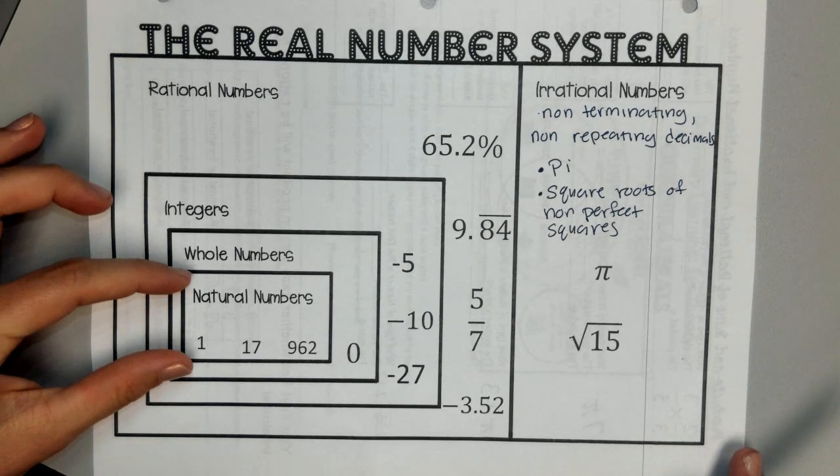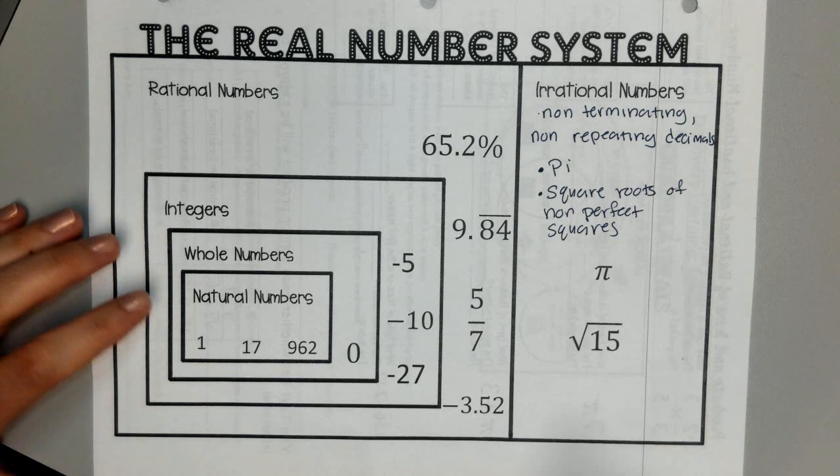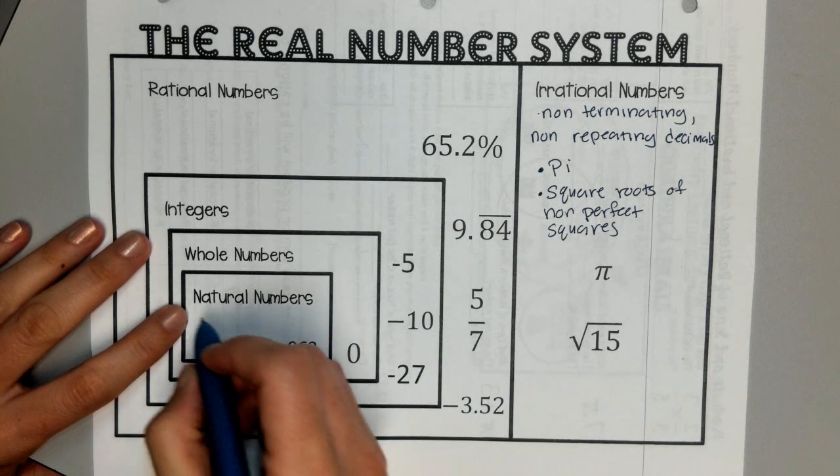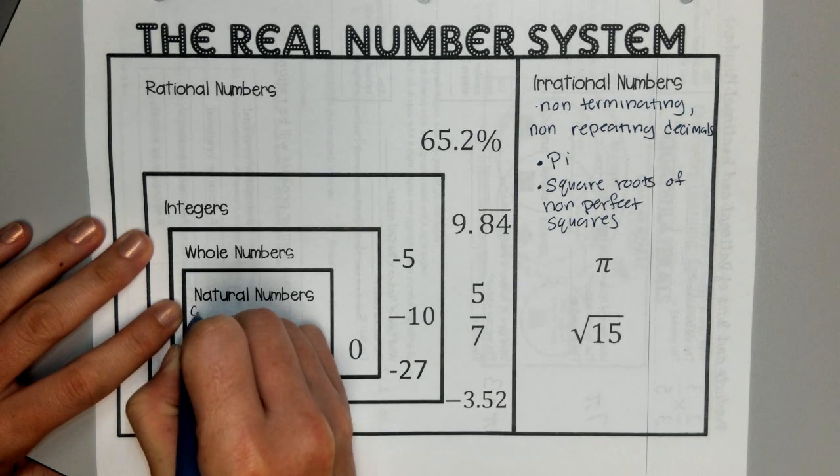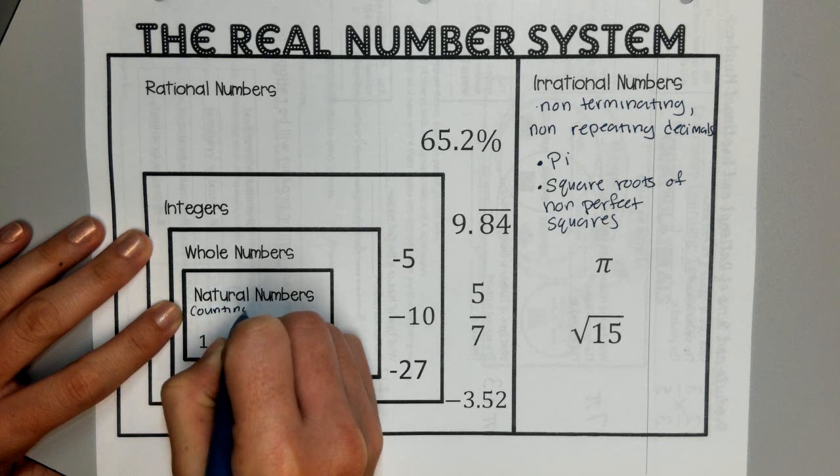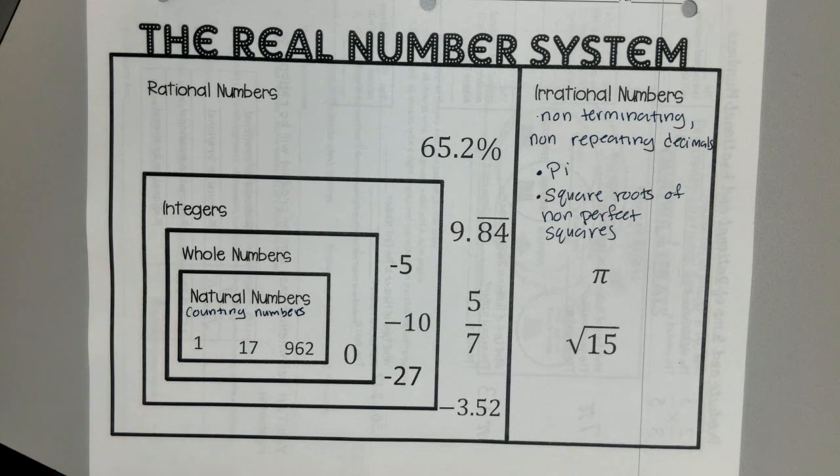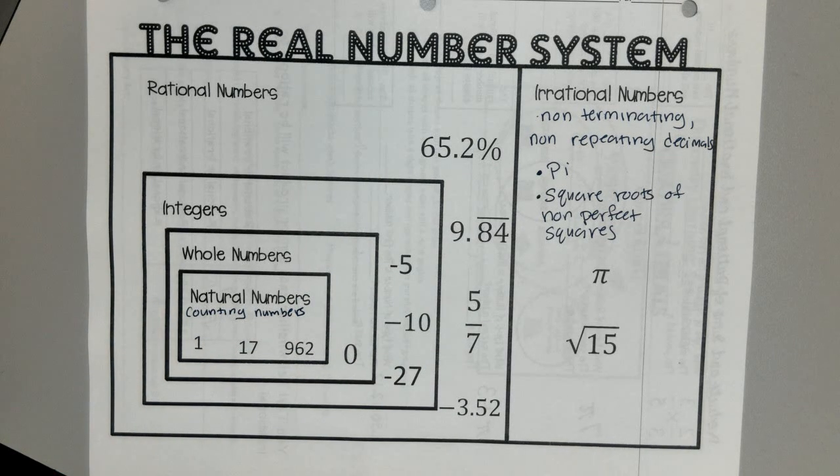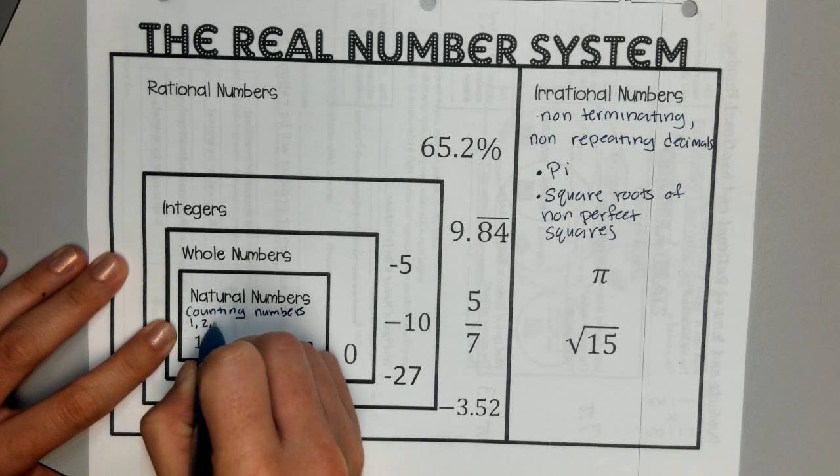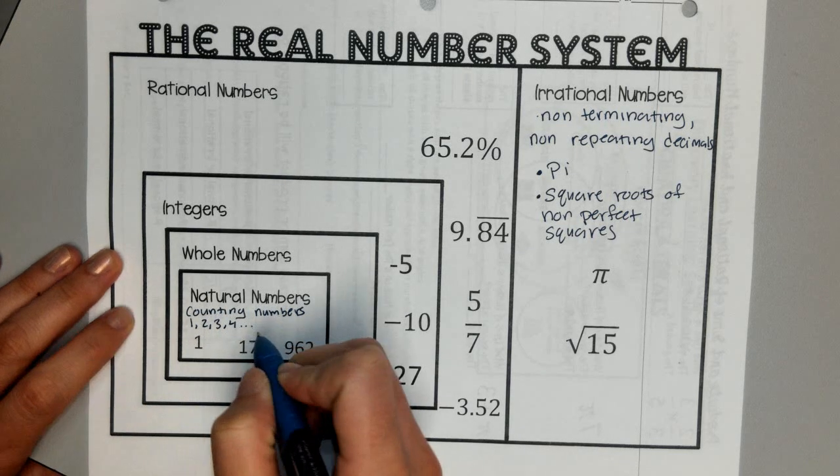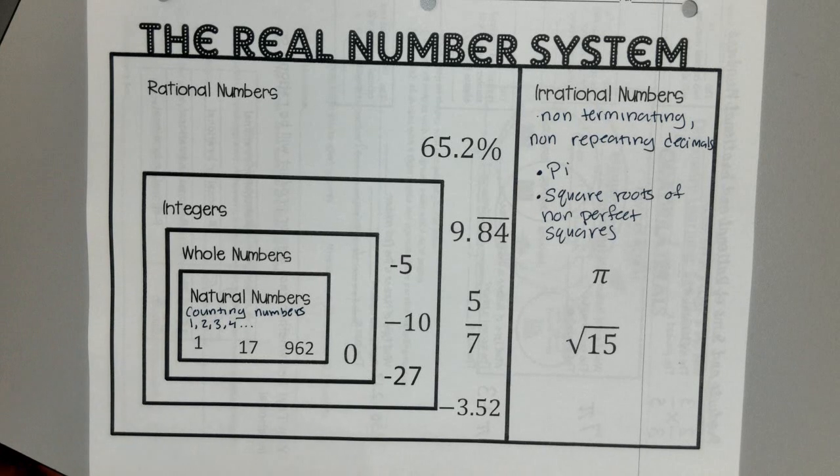For our rational numbers, I like to work on the inside and work our way out. So natural numbers are just counting numbers. We naturally learn to start counting at 1. You never start counting at 0. You never start counting with negative. So our counting numbers are 1, 2, 3, 4, etc. It keeps on going up forever and ever.